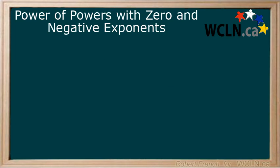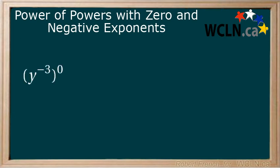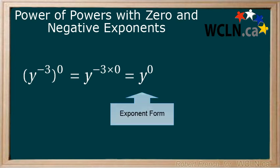What happens if your power of a power involves a negative exponent and zero? Well, zero multiplied by anything, including a negative number, equals zero. Y to the power of negative 3, to the power of zero, equals y to the power of negative 3 multiplied by zero, which equals y to the power of zero. We can leave our answer here in exponent form, or take it one step further to equal one.